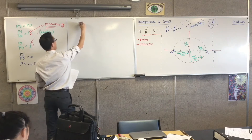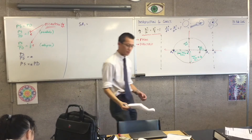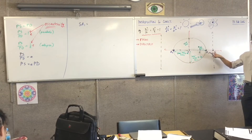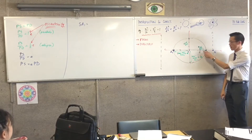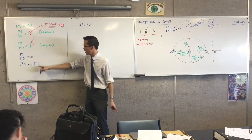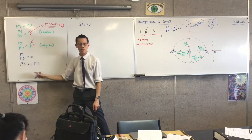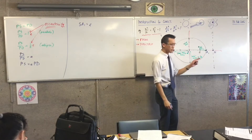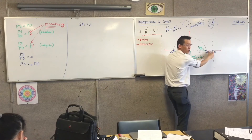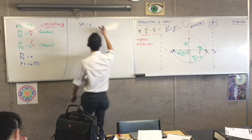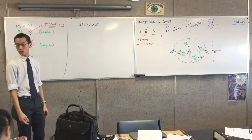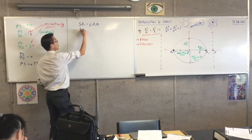So: SA1 — that represents PS where the particular point is A1 — that should equal E, the eccentricity by definition, times the other distance. The distance from A1 to the directrix is the shortest, perpendicular distance: A1N. I can make exactly the same statement for A2, because it's on the locus and obeys the same geometric law. So SA2 equals E times A2N.